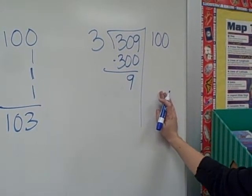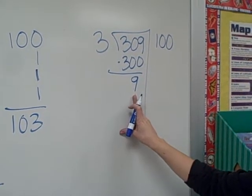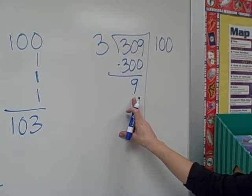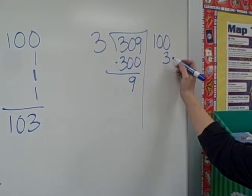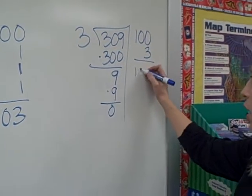To take a shortcut you could use what you know about your math facts. 3 times what gives us 9, closest to 9 without going over? We could use 3 times 3, 3 times 3 is 9, we have no remainders and our answer is still 103.